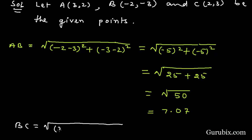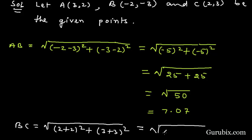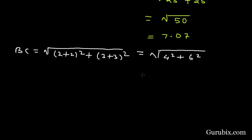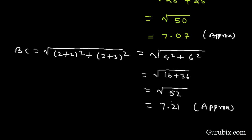For BC: square root of (2-(-2))² + (3-(-3))², which gives square root of 4² + 6², equal to square root of 16 + 36, giving us square root of 52. The value of square root of 52 is approximately 7.21, and the value of square root of 50 is approximately 7.07.